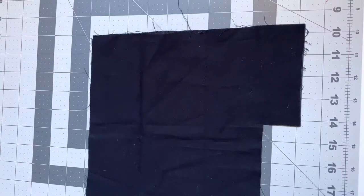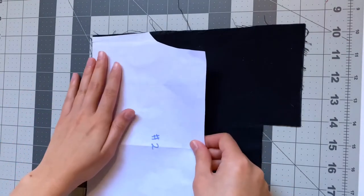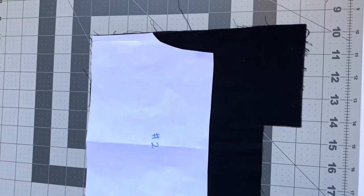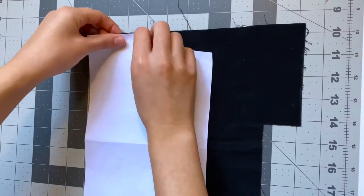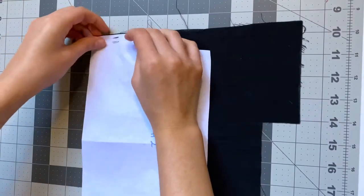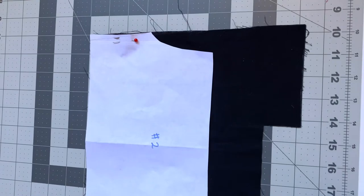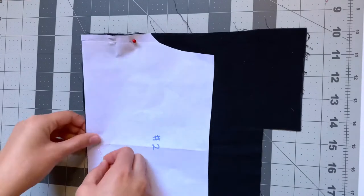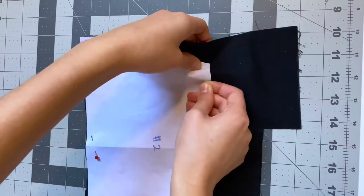The first thing we need to do is cut out our pieces. I'm going to be using a cutting mat but you can always just use scissors. I'm going to lay my number two pattern on top of my fabric and pin it down. This piece is for the pants part so I'm going to be needing two of these. Since I didn't have much fabric to work with, I'm going to cut these two pieces out separately.